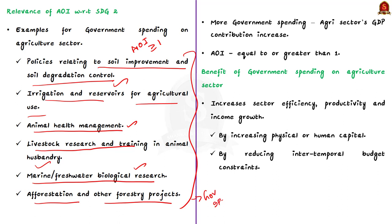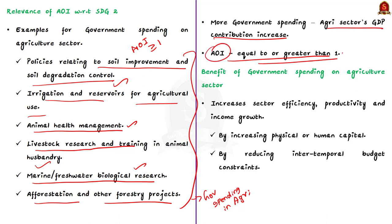When government spending is more in the agriculture sector, the sector's contribution to GDP will increase. This will result in a relative increase in agriculture share of GDP, so at that time the AOI would be greater than or equal to one.